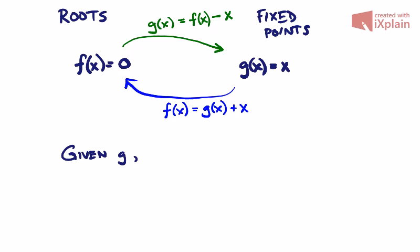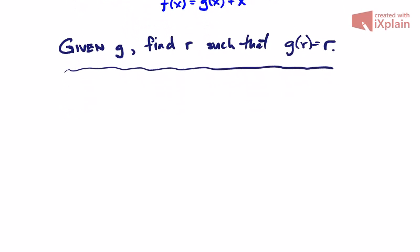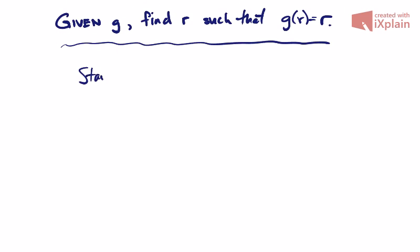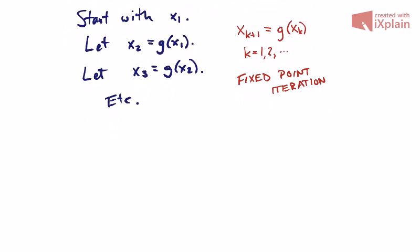We're going to take a few minutes to look at this problem from the fixed-point point of view. Given a function g, find a value r such that g of r is equal to r. We start with some value x1 — anything you like. Then x2 is defined as g applied to x1, x3 as g applied to x2, and so on. We write this as x_(k+1) = g(x_k), where k starts at 1 and goes to 2, 3, and so on. This is called the fixed-point iteration.